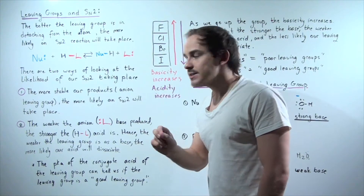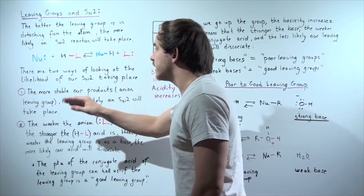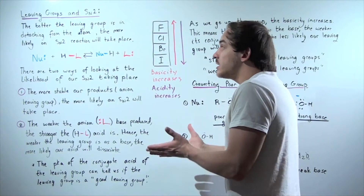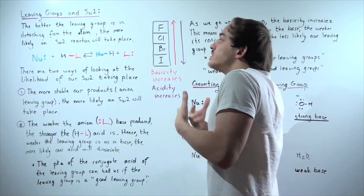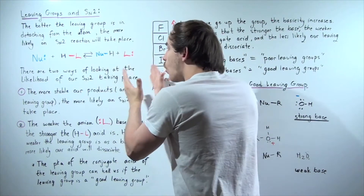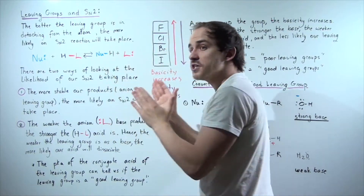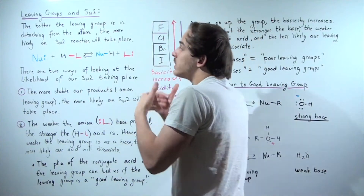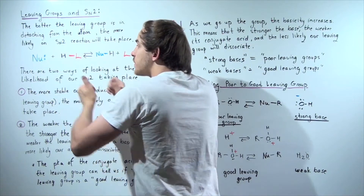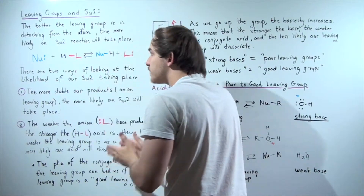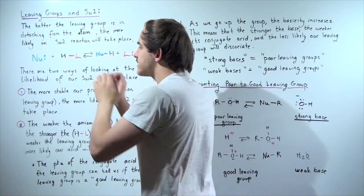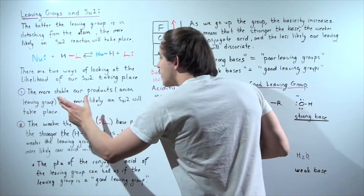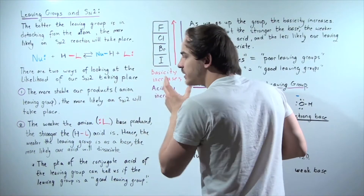There are two different ways that we can look at the likelihood of our SN2 reaction taking place. The first is to look at the stability of our products. How stable are our products when they're formed? If our products are very stable, that means equilibrium will lie towards the product side. If the reactants are more stable, equilibrium will lie to the reactant side. So the more stable our products — meaning this anion leaving group — the more likely an SN2 reaction will take place.